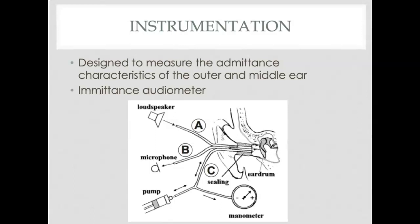Here's some of the instrumentation we use to measure acoustic admittance. Tympanometry falls underneath that umbrella, and so what we have here is a loudspeaker that plays a sound, a microphone that records the intensity of the sound, and then a pump that puts positive or negative air pressure into the ear.